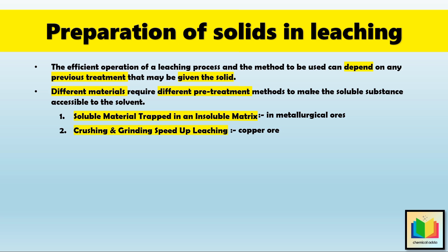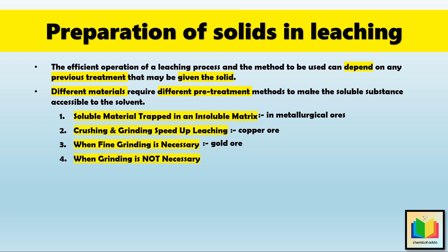That is why grinding is often necessary. But since grinding is expensive, the decision on how much to grind depends on the quality of the ore. When fine grinding is necessary — like in the case of gold ores — gold ores have tiny metallic particles trapped in quartzite, and this quartzite is highly resistant to solvents, so grinding to a fine 100-mesh powder is essential for leaching. When grinding is not necessary, leaching is done without fine grinding, because not all materials need fine grinding. If the soluble substance is evenly distributed and the structure allows the solvent to flow, leaching can happen without extra processing.